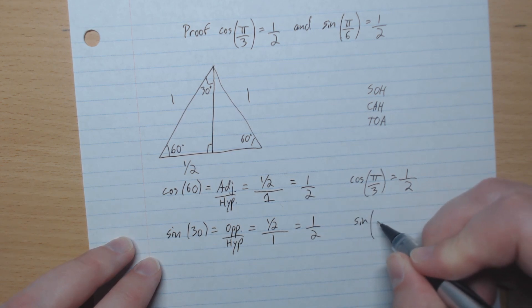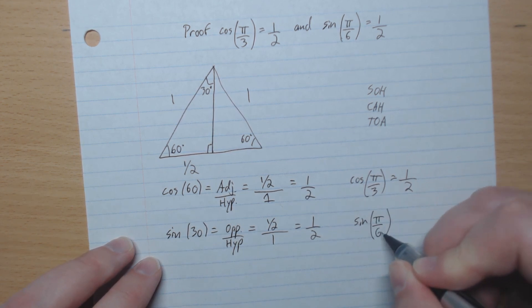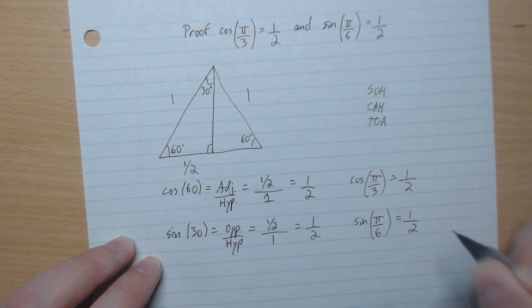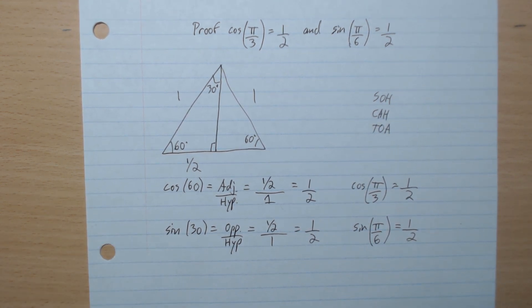And of course 30 degrees is pi over 6. And there you go. That's it. I'll see you in the next lesson.